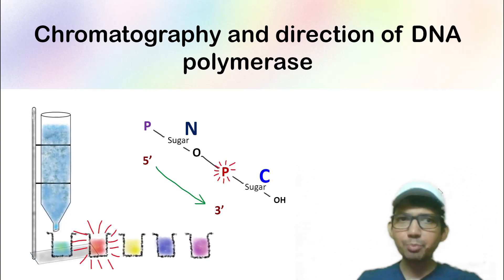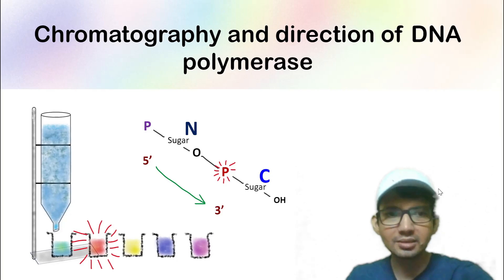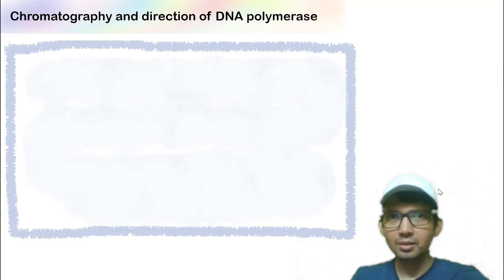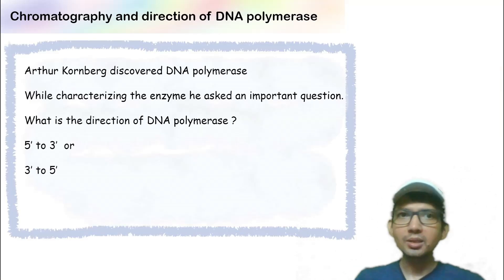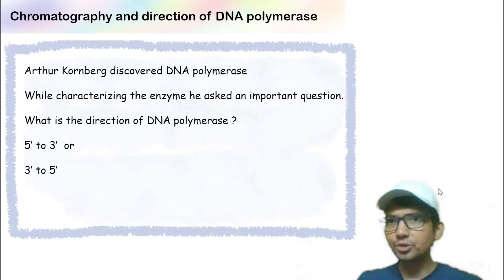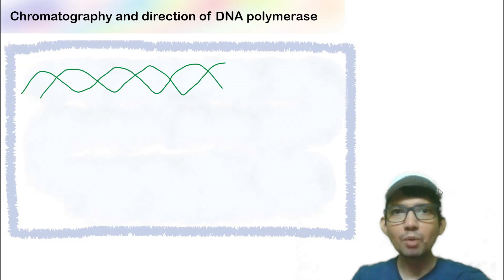Arthur Kornberg designed a brilliant experiment in mid-1950s to find the direction of DNA polymerase. When he discovered DNA polymerase, while characterizing the enzyme, he asked an important question: what is the direction of DNA polymerase? Is it from 5 prime to 3 prime, or is it from 3 prime to 5 prime? To answer this question...